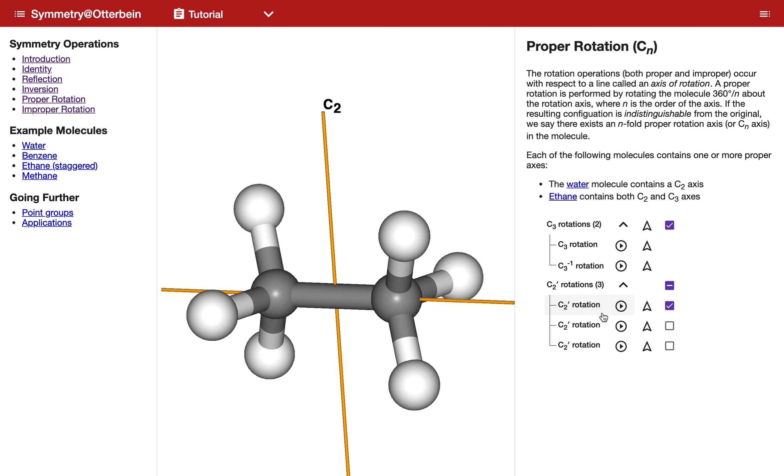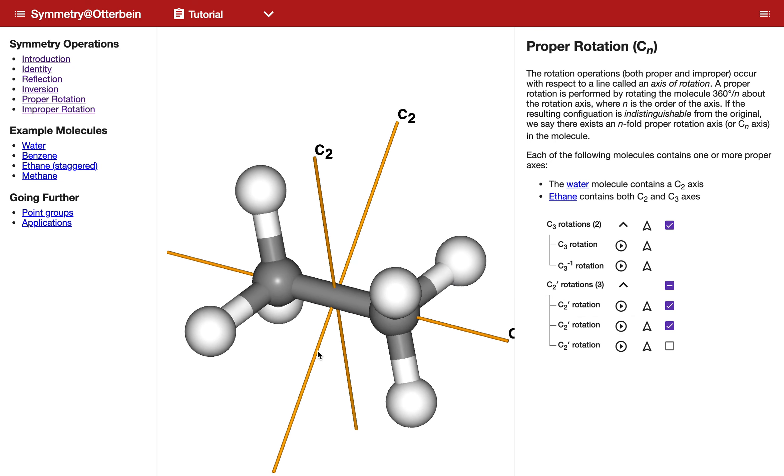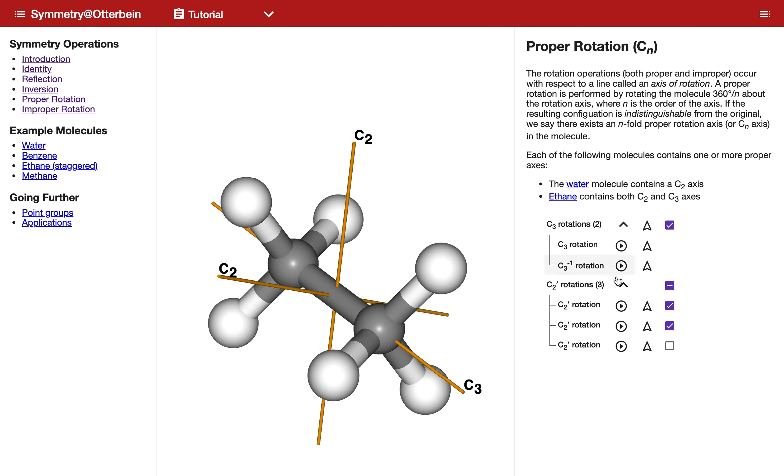So sometimes they're not so easy to see, but we have equivalent ones now that can match different sets of hydrogens up with one another. So when I rotate that one, we can see what that example looks like.